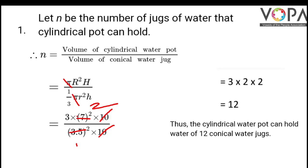Hence we can write, thus the cylindrical water pot can hold water of 12 conical water jugs.